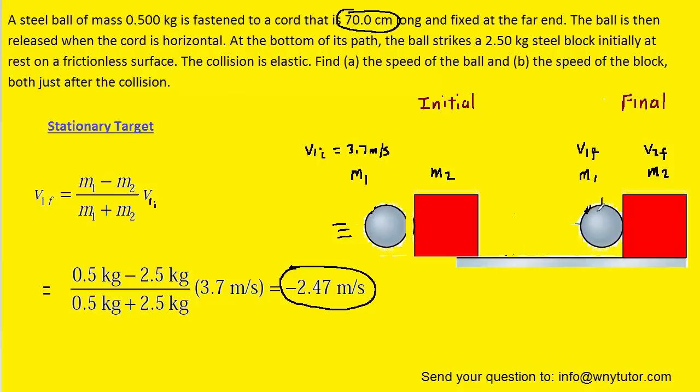Notice the negative sign indicates that the steel ball, after the collision, has rebounded and is now traveling to the left.